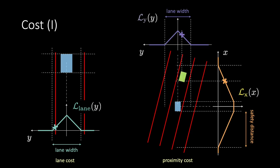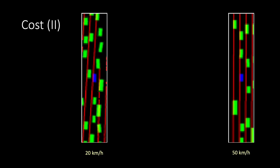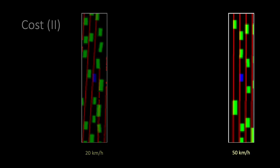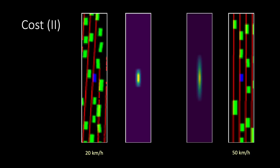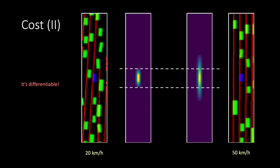Let's see how we can reformulate the proximity cost to make it differentiable. Here I'm showing a situation where we are moving around 20 km/h on the left-hand side, and 50 km/h on the right-hand side. You can see how vehicles are more distant from each other on the right-hand side. The potential in the x direction changes with speed, so at 50 km/h our potential is much longer. In order to get the final proximity cost, we multiply pixel by pixel the map and the green channel and then take the max. The nice point is that it's differentiable — we can directly use it with our neural network and train it to minimize such cost.